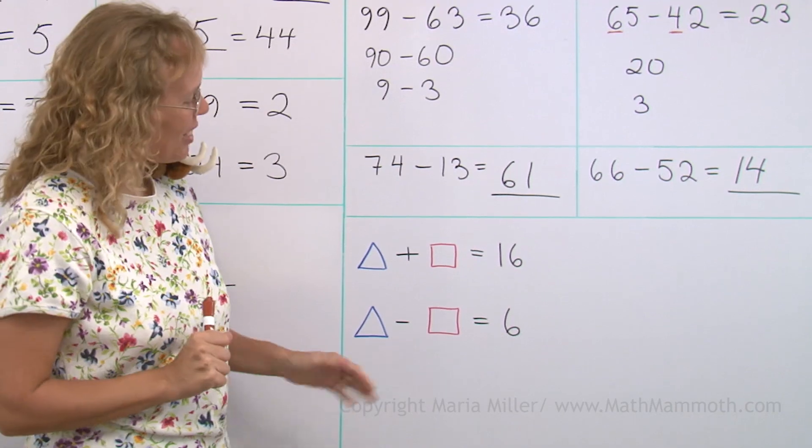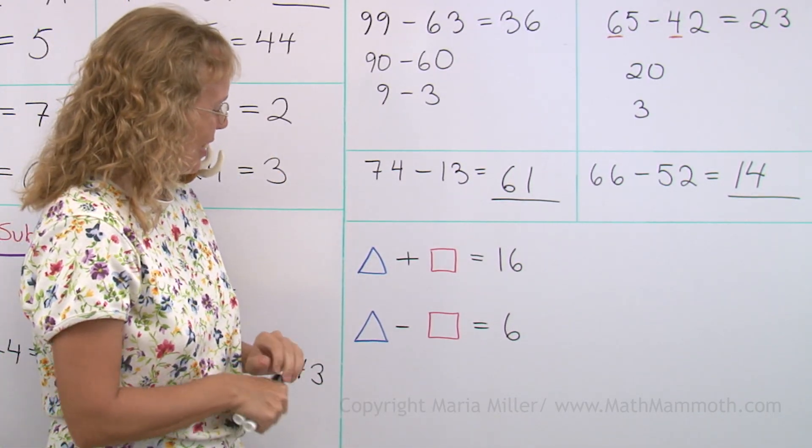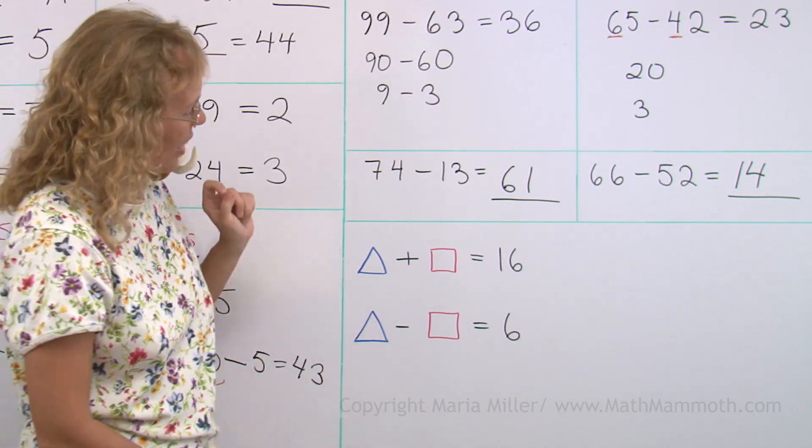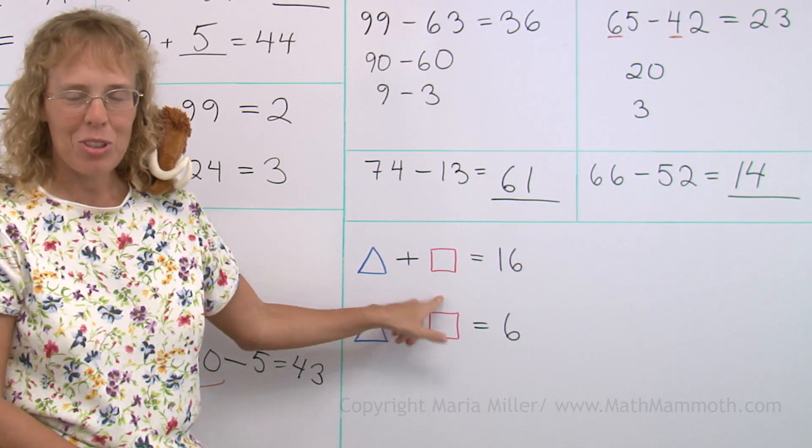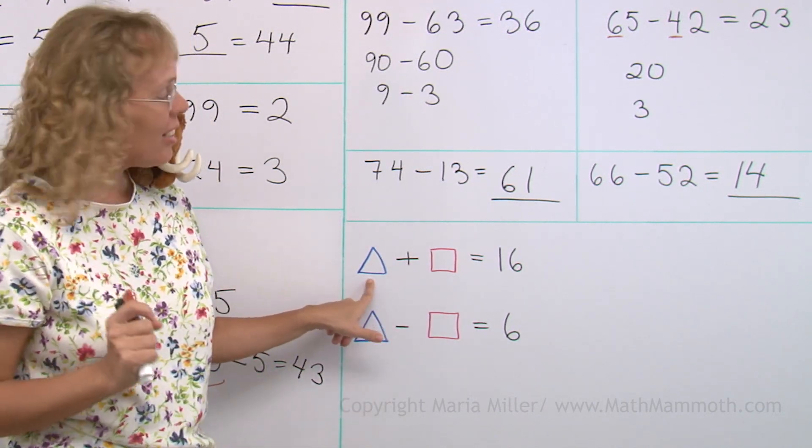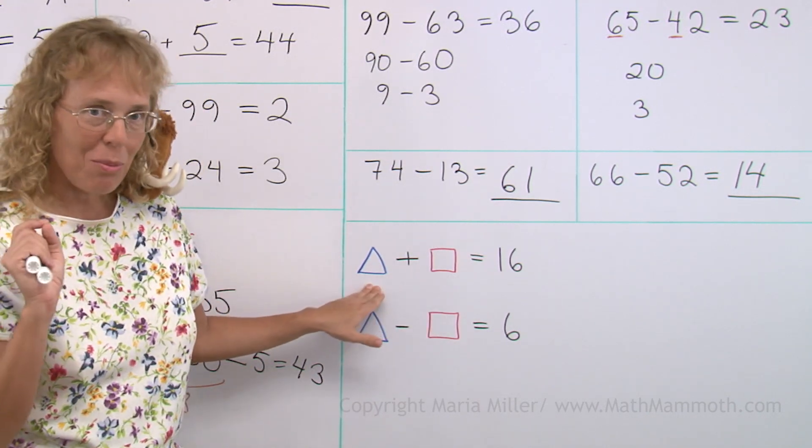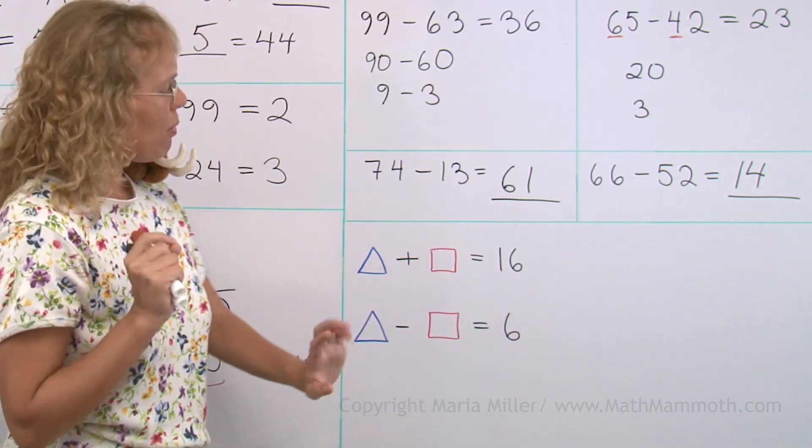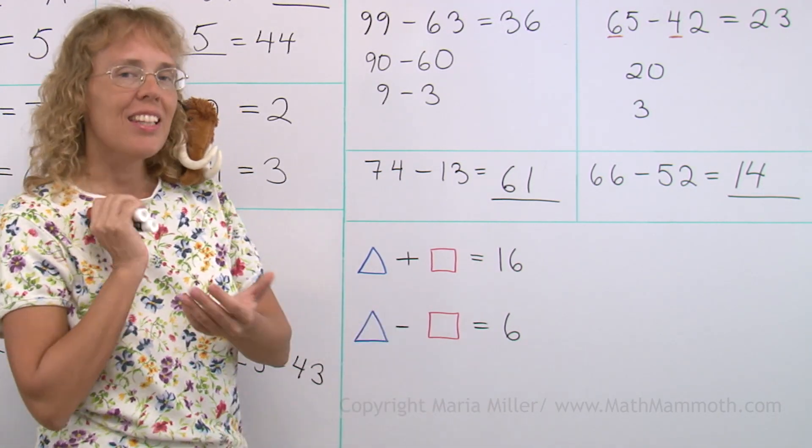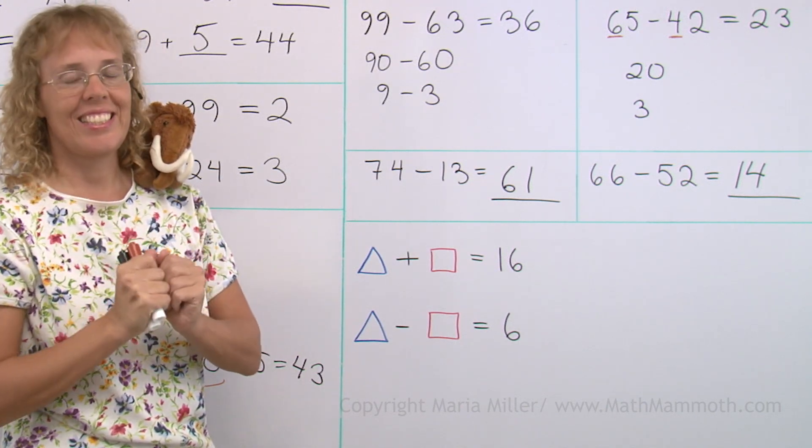Lastly, I want to solve this puzzle. Oh, me and Mathi. We'll solve it together. And in case you haven't seen these kind of puzzles before, it has two unknown numbers, two mystery numbers for us to solve. One number is this triangle and the other one is this square. If we add these two numbers, we get 16. If we subtract them, we get 6. And the idea I want you to try is to just guess and check.